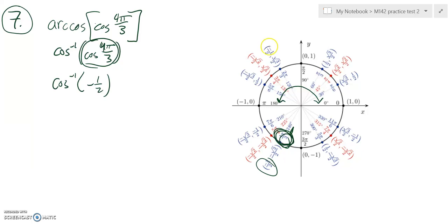So inverse cosine of negative 1 half, that's here, so it's actually this value, 2 pi over 3.